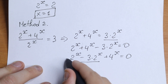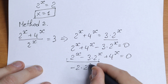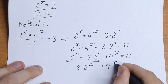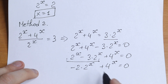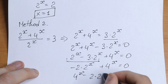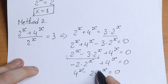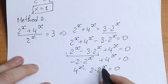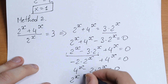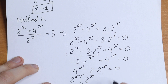That gives us minus 2 times 2 to the power x. So we have: minus 2 times 2 to the power x plus 4 to the power x equals 0. Swapping the terms: 4 to the power x minus 2 times 2 to the power x equals 0. We can write 4 to the power x as 2 to the power 2x, and then factor out 2 to the power x: 2 to the power x times (2 to the power x minus 2) equals 0.